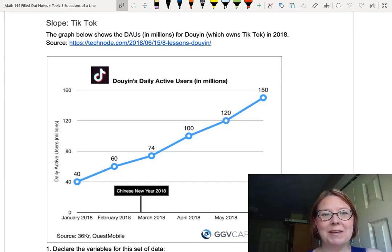Let's look at slope in an application problem. We're going to look at the app TikTok and look at the daily active users in millions over several months in 2018, when TikTok was going through pretty rapid adoption.